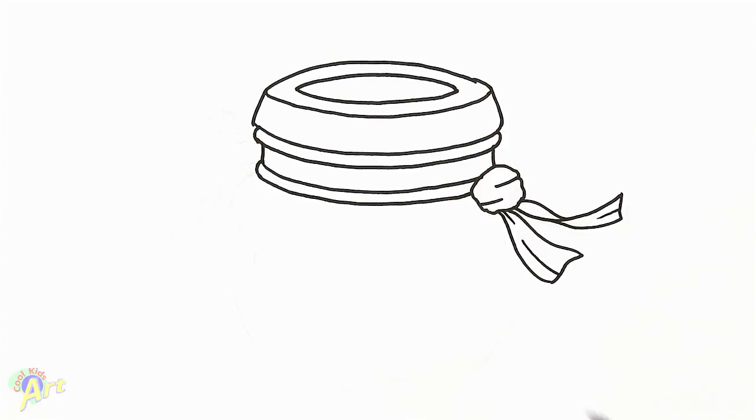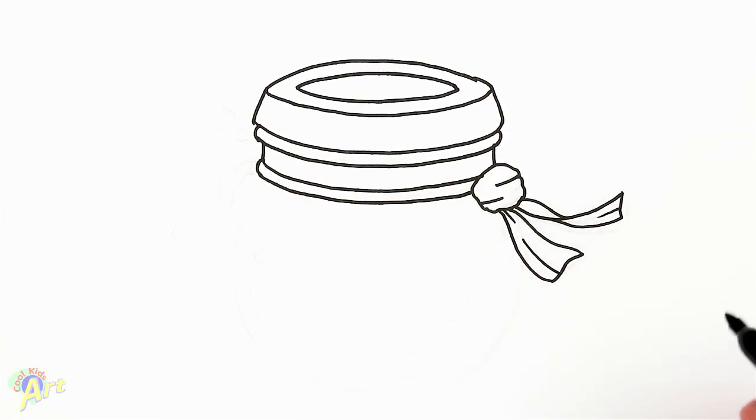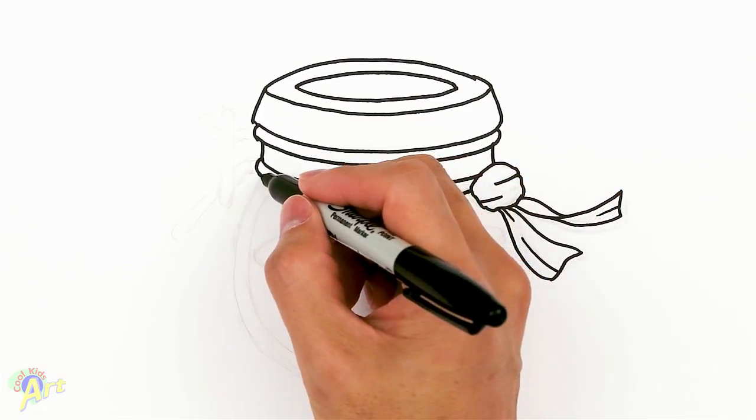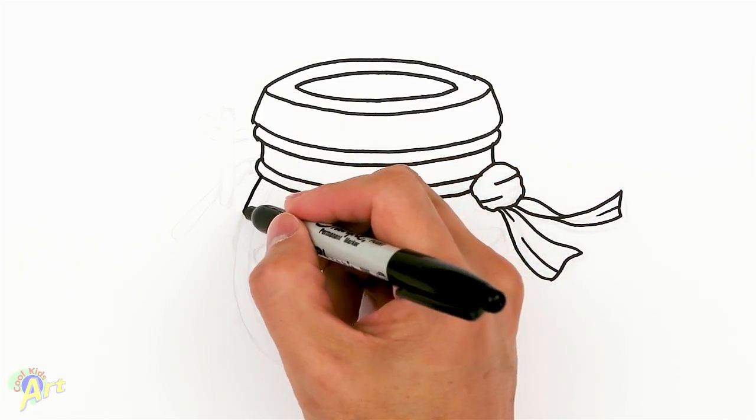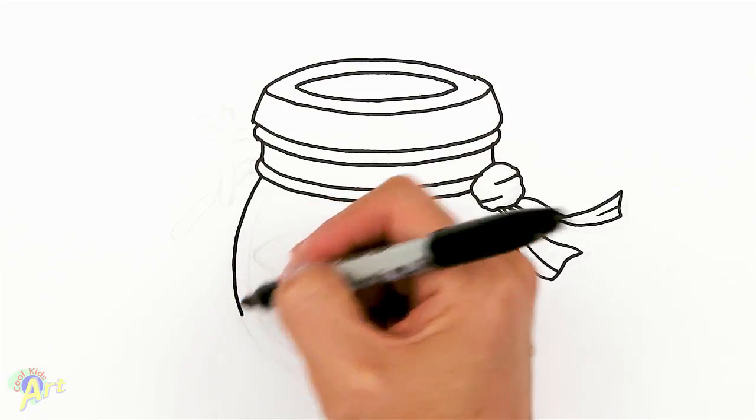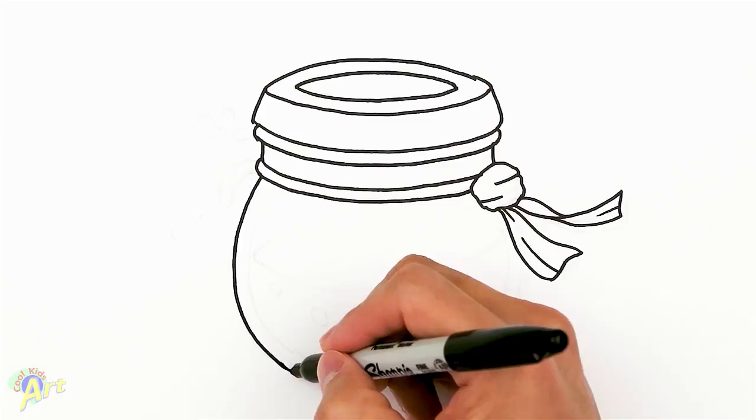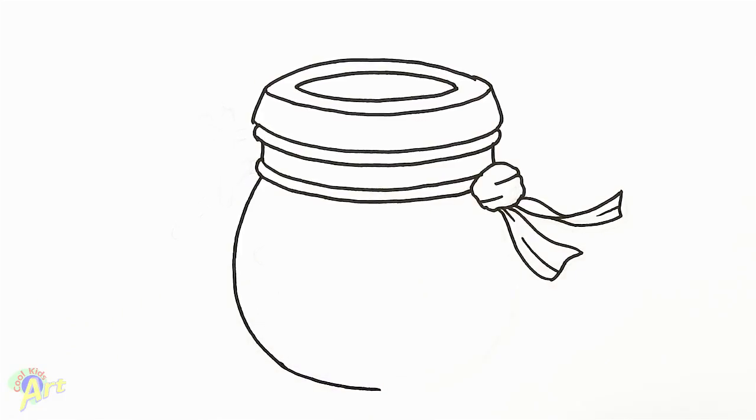So now let's draw in the bottle itself, so this one is, it's a little bit tricky, so from here, we're just going to go down, just draw yourself a nice big round curve, and it's very tricky actually, to draw this kind of stuff freehand.